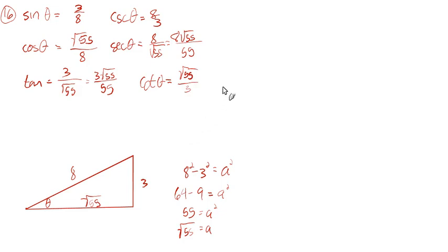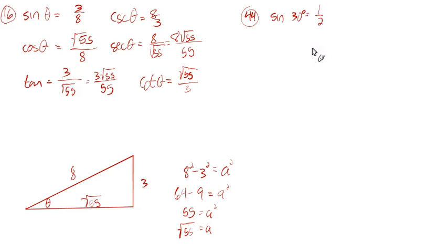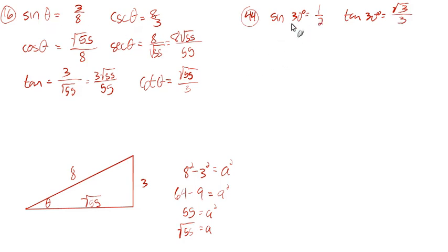On to number 44. They tell us that sin(30°) = 1/2 and tan(30°) = √3/3. They want us to find the cosecant. Well, the cosecant is the reciprocal of the sine. So the cosecant of 30 degrees is the reciprocal of 1/2, which is 2 over 1, or just 2. That was part A.